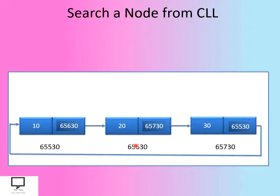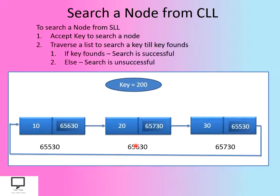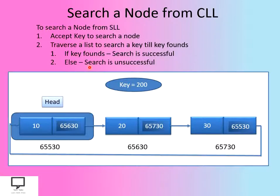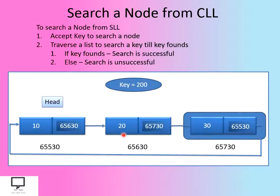Now let's look at another search example where the key is 200. If the key is found, search is successful; otherwise, search is unsuccessful. Starting from the head node, we compare its information part with the key — they are unequal. Moving forward, the key value and the next node's information part are also not equal. Continuing forward, the key and the information part are again not equal.